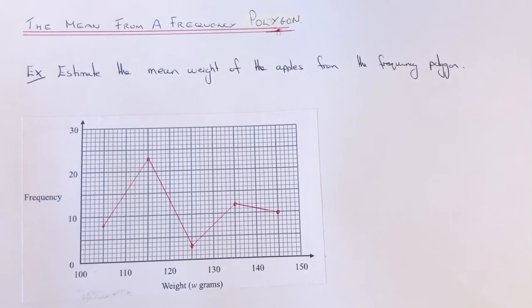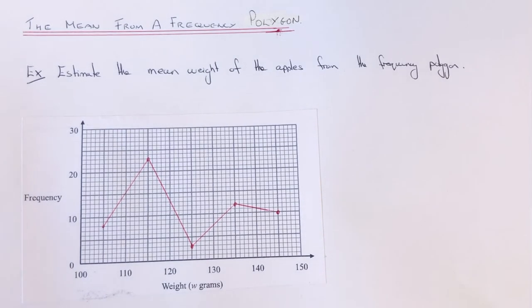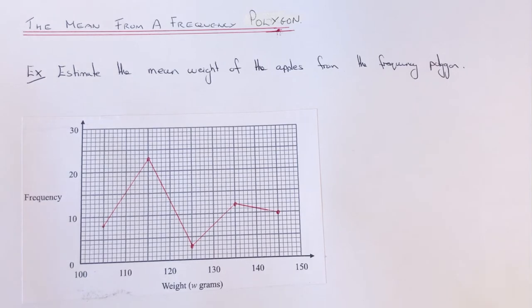Today I'm going to show you how to work out the mean from a frequency polygon. This is very similar to working out the mean from a frequency table, where you need to multiply the midpoints of each group by the frequency.